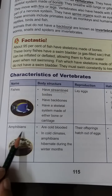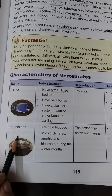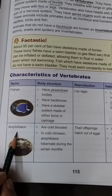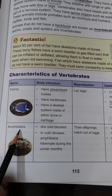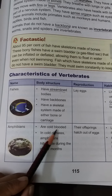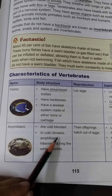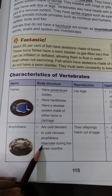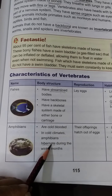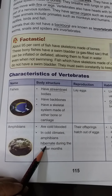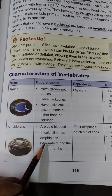Next are amphibians — animals which live in water as well as on land. Amphibians are cold-blooded animals. In cold climates, amphibians hibernate during the winter months — hibernate means they go into a long sleep during winters.